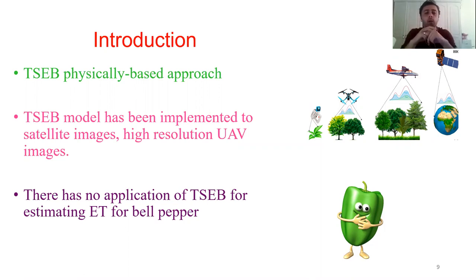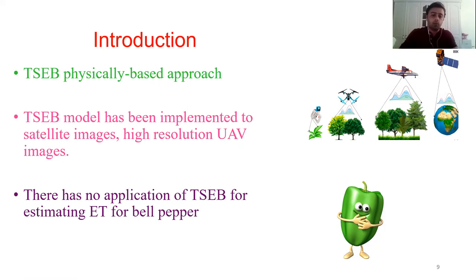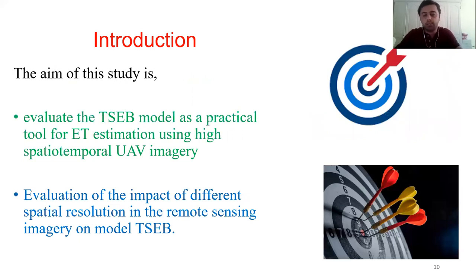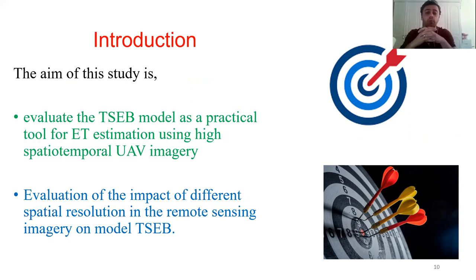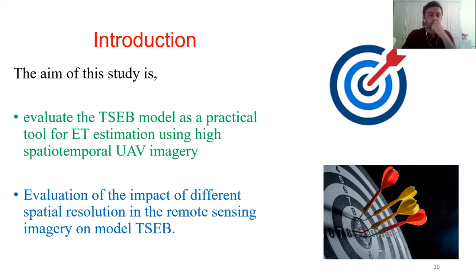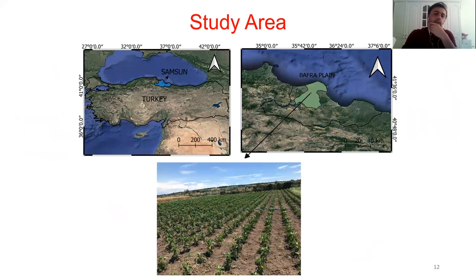There are also studies using handheld radiometers for the T-STEP model, but in the literature there is no application for bell pepper ET estimation using T-STEP. Therefore, the aim of this study is bell pepper ET estimation by the T-STEP model, evaluating estimated ET against ground-measured ET, and also investigating whether pixel resolution has any effect on T-STEP model performance.